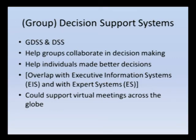Decision support systems are valuable in organizations. Some are designed to help individuals make decisions; others are group decision support systems that facilitate collaboration and group decision-making. There is overlap here — executive information systems and expert systems are also decision support systems, helping executives make good decisions.